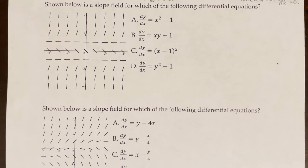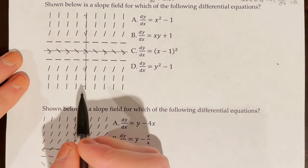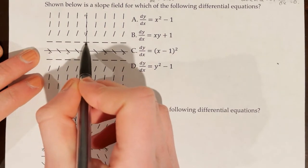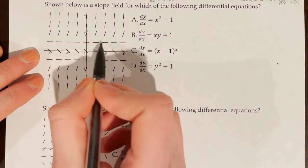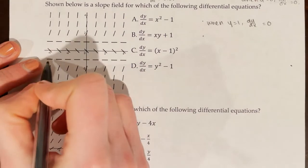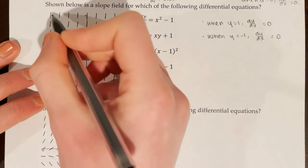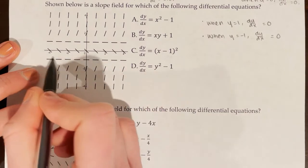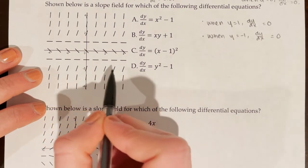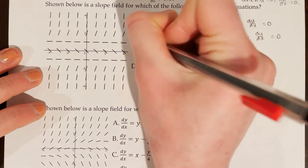Shown below is a slope field — which of the following differential equations does it represent? We use process of elimination. We observe that when y = 1, dy/dx = 0 (horizontal lines), and when y = -1, dy/dx = 0. We also notice that in each row, all the tangent lines are identical — the columns differ, but within each row the slopes are the same. This means x does not affect dy/dx, so x is not part of the differential equation. We can eliminate answer choices A, B, and C.